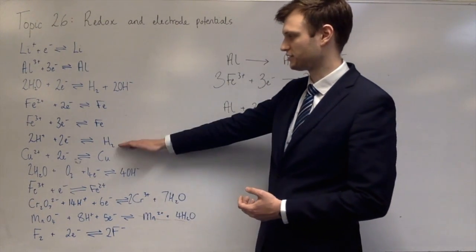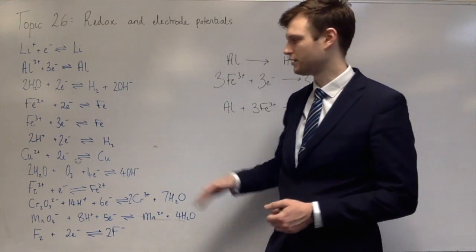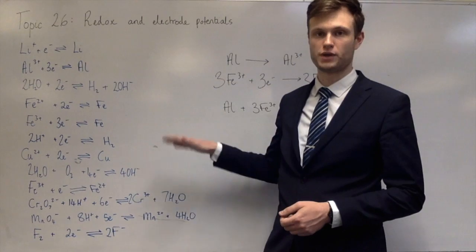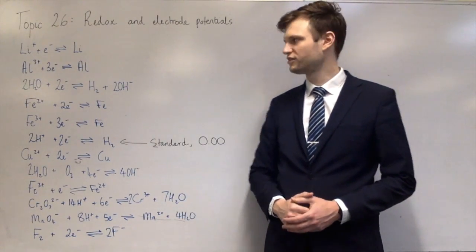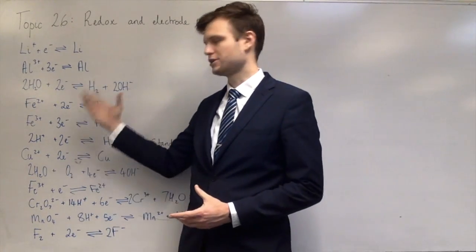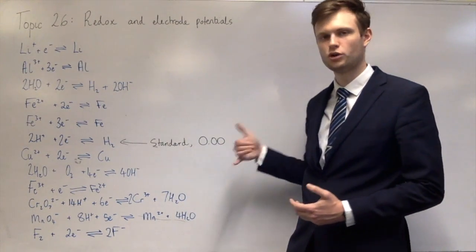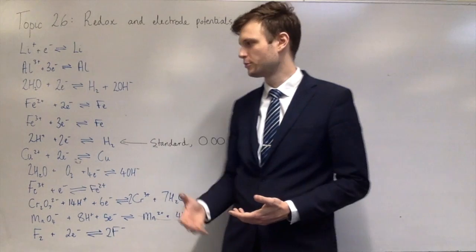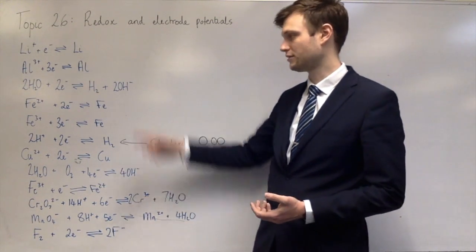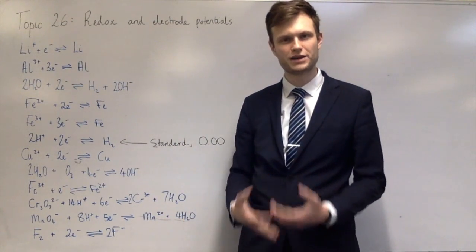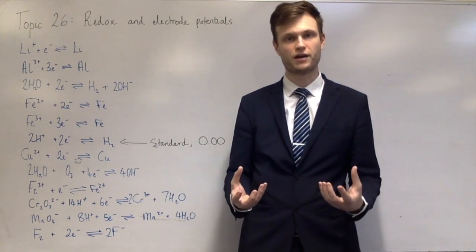To do that we need to set a standard. As chemists often do, we compare everything to a standard. The standard we use is 2H+ gaining two electrons to make hydrogen — we set that as zero. Because these are all about electron transfers and the potential for electrons to be gained or lost, if you have two half-equations what you've actually got is a potential difference — a voltage between two halves of a reaction. The bigger the difference, the bigger the voltage.